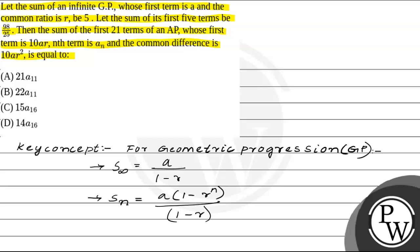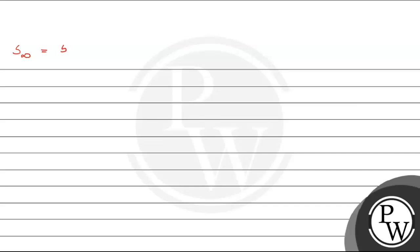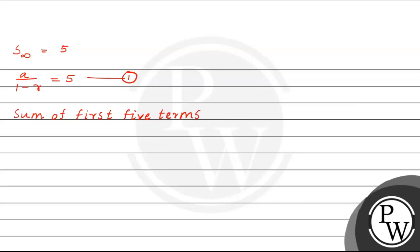Now we will use both these formulas to solve the question. It is given that the sum of infinite terms of the GP is equal to 5. So we know the formula: A divided by 1 minus R is equal to 5. Let's take this as equation number 1. Next, it is given that the sum of the first 5 terms of the GP is 98 by 25.